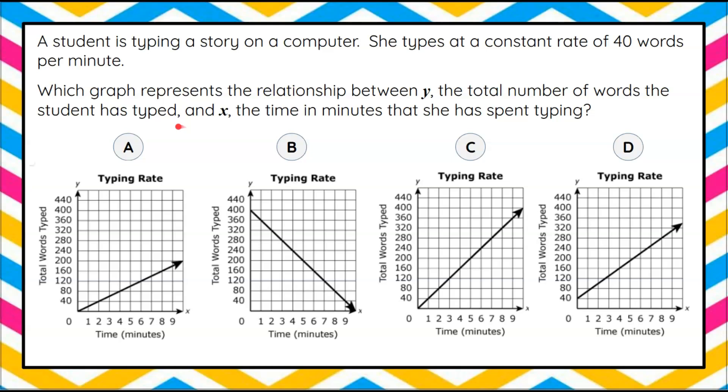A student is typing a story on a computer. She types at a constant rate of 40 words per minute. We're asked which graph represents the relationship between y, the total number of words the student has typed, and x, the time in minutes that she has spent typing. And you're given four graphs to pick from to see which one represents this real world situation.